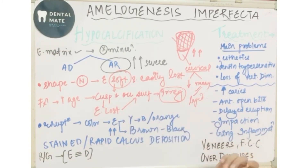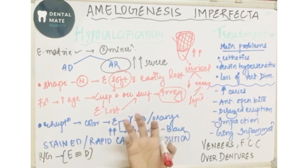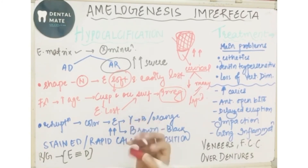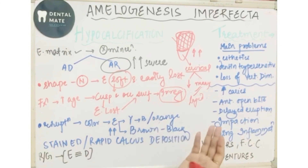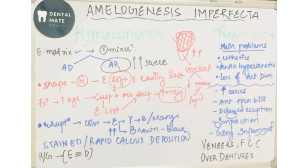For treatment, various options include veneers, complete dentures, over-dentures, or full coverage crowns. With this, we complete amelogenesis imperfecta and its types, covering clinical features, radiographic features, etiology, and everything.